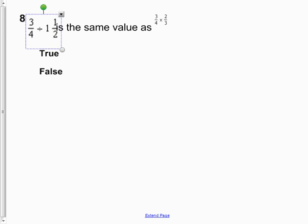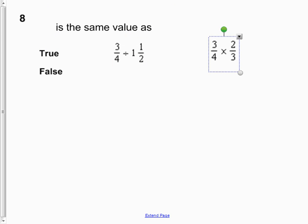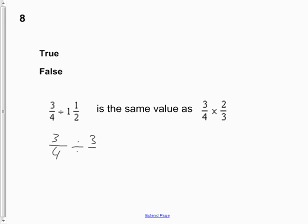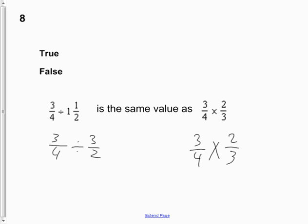Question 8 compares a division of fractions to a multiplication of fractions. It says three quarters divided by one and a half is the same value as three quarters times two thirds. When you divide mixed fractions, change them to improper fractions, then change the division to multiplication and use the reciprocal. Looking at the two expressions, they are the same thing — so yes, it is true. Those two expressions will have the same value.